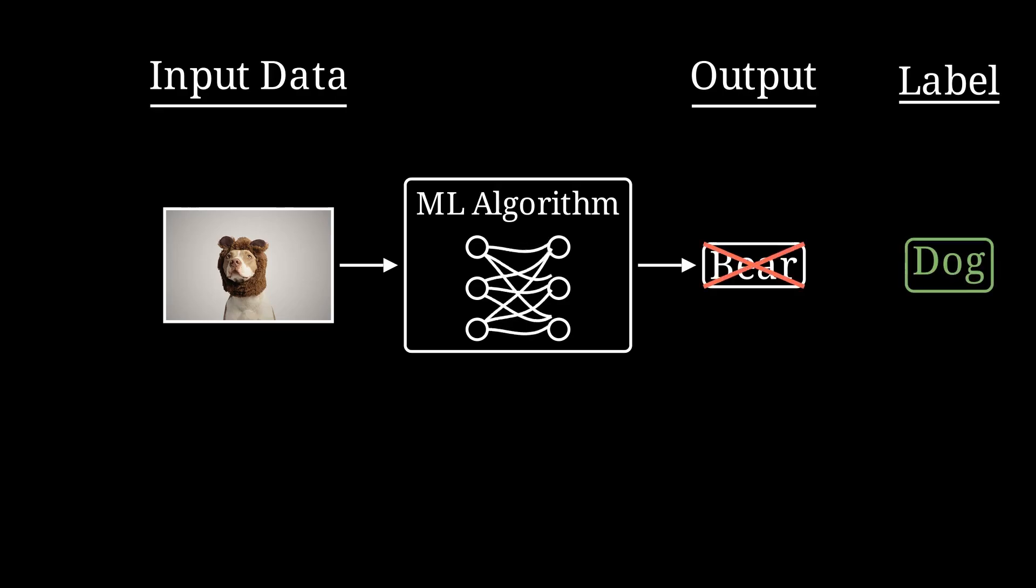After some time of being wrong and some optimization, our model will eventually predict the labels correctly. But what happens if we don't have labeled data? Can we still teach a machine to learn something useful? Well, the answer is yes, we actually can.